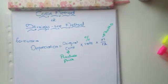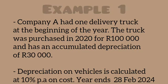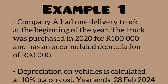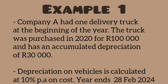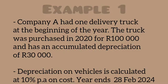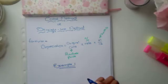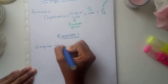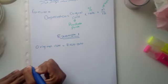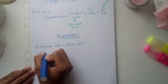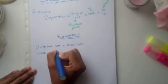Now that you have the formula, let's do Example 1. A company had one delivery truck at the beginning of the financial year. The delivery truck was purchased in 2020 for 100,000 rands and has an accumulated depreciation of 30,000 rands. Depreciation on vehicles is calculated at 10 percent per annum. So our original cost is 100,000 rands and our rate is 10 percent, written as 10/100.